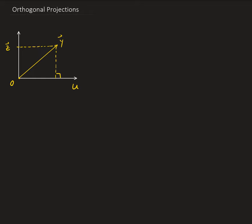In this lesson, I'm going to talk about orthogonal projections. So suppose we have a vector y here that's given in the figure, and we want to project it onto u. So u is a vector here.